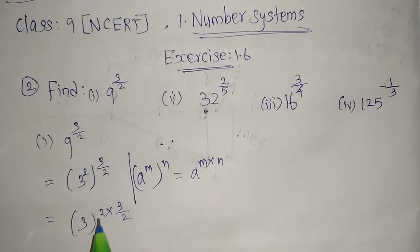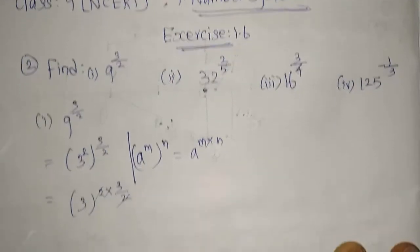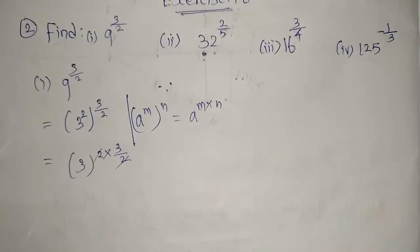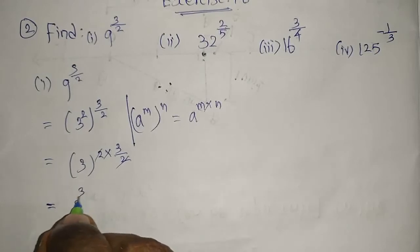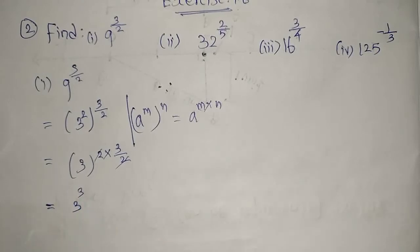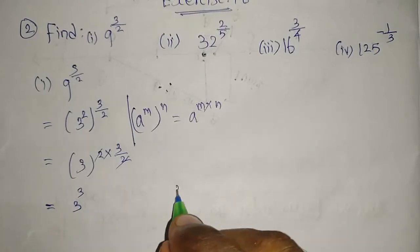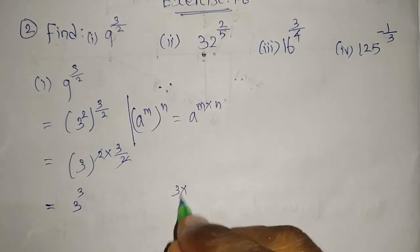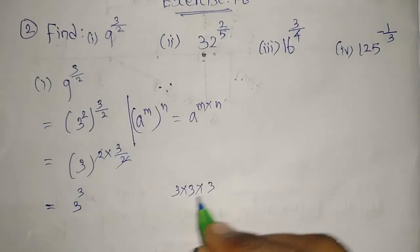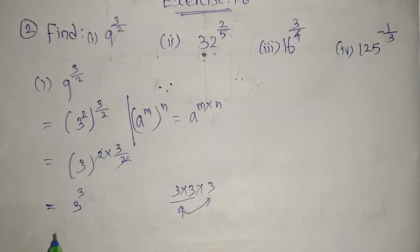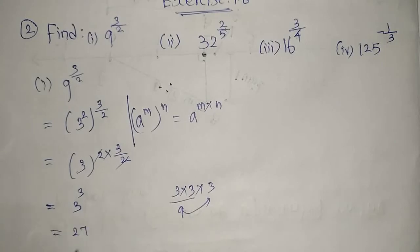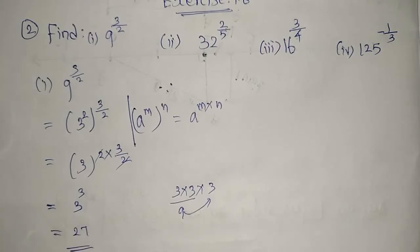The 2 and 2 cancel, and what we get is 3 power 3. 3 power 3 means we multiply 3 three times: 3 into 3 into 3. 3 times 3 is 9, and 9 times 3 is 27. So 27 is the required answer for the first question.